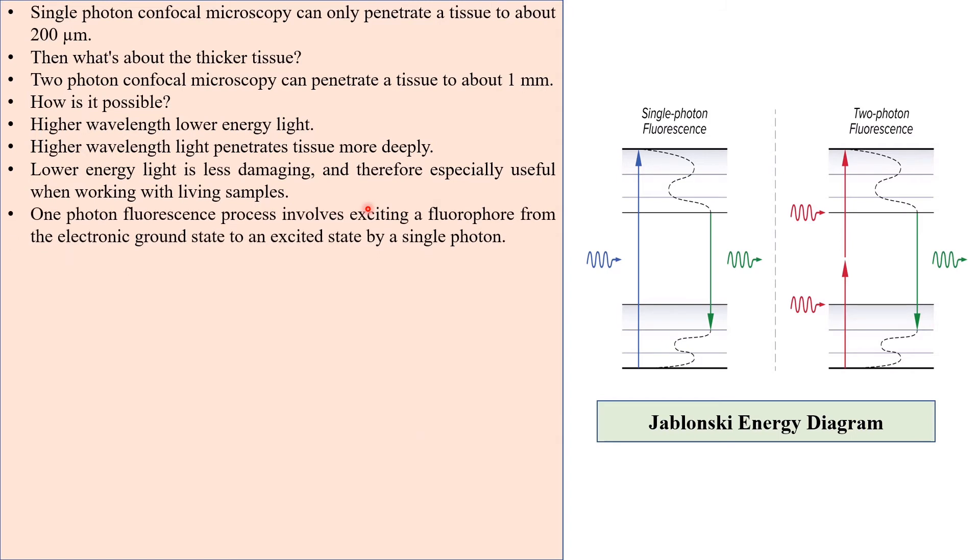Now we should know where this higher wavelength light comes from. Look at the Jablonski energy diagram. Here, one photon fluorescence process involves exciting a fluorophore from the electronic ground state to an excited state by a single photon. This process requires photons in the ultraviolet or blue-green spectral range.